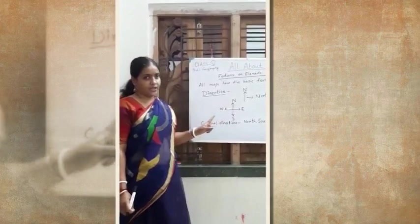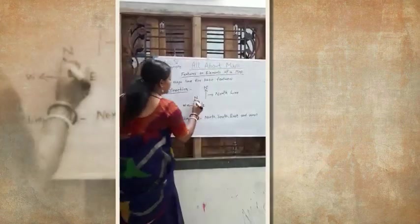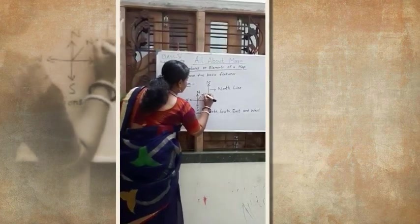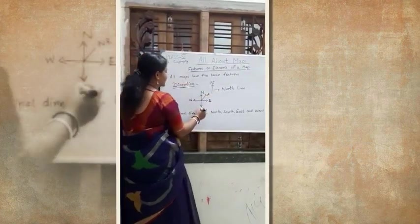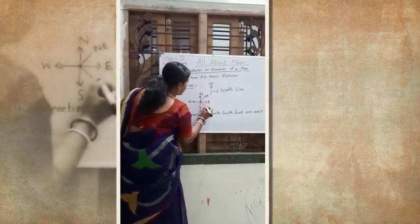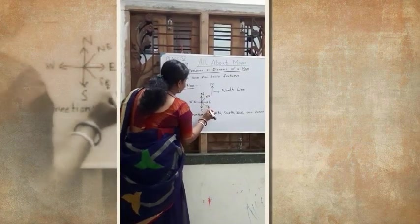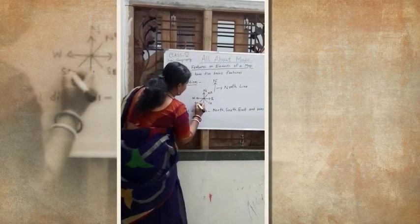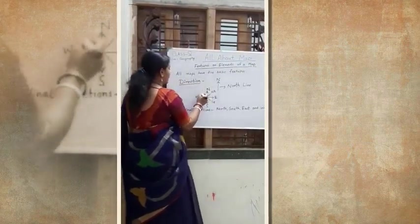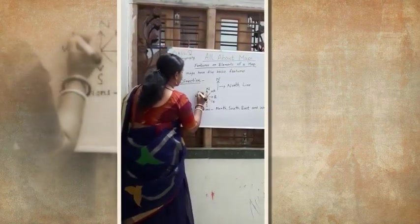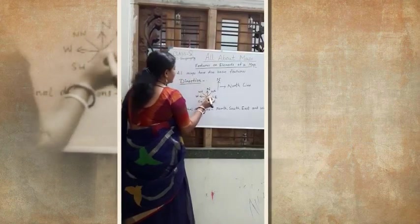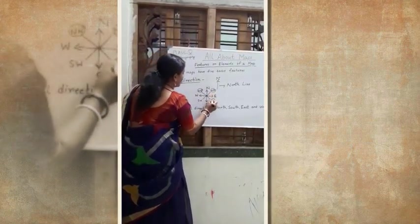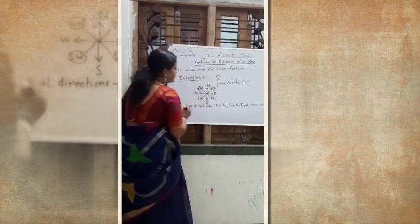Apart from these four cardinal directions, there are other four directions. In between north and east, there is northeast. Between south and east, there is southeast. Between south and west, there is southwest. And between north and west, there is northwest. These directions are called intermediate directions.